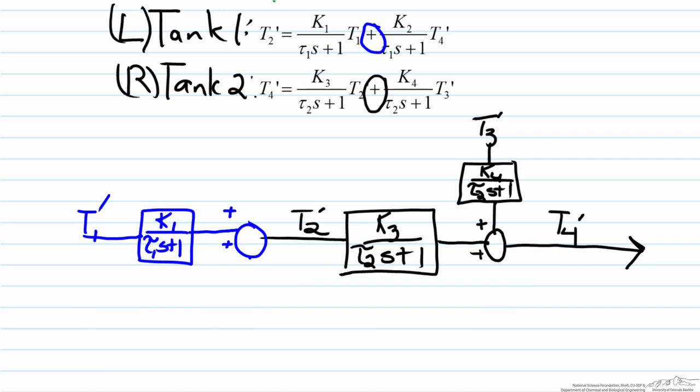So what we should do instead is, since this stream represents T4, we use a branch point. Remembering that a branch point everything represents the same, so therefore this is also T4.